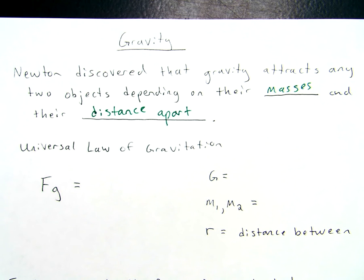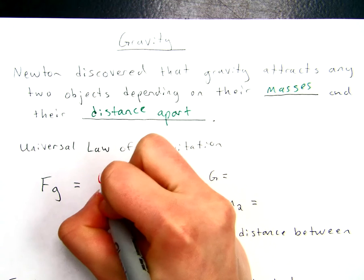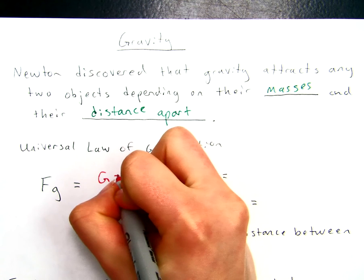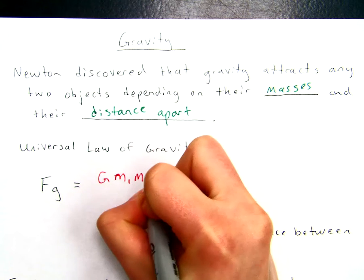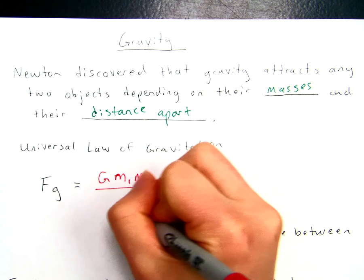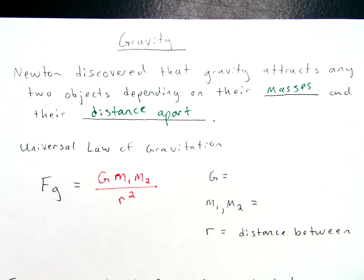And it's the Universal Law of Gravitation. This simply states that gravity attracts any two objects depending on their masses and the distance between them. I'm just going to go ahead and give you the full equation. Let the shock of it just take a deep breath after you see it and then we'll talk through it.